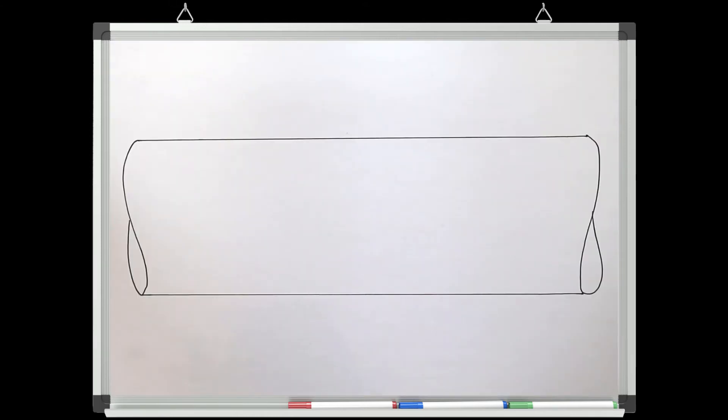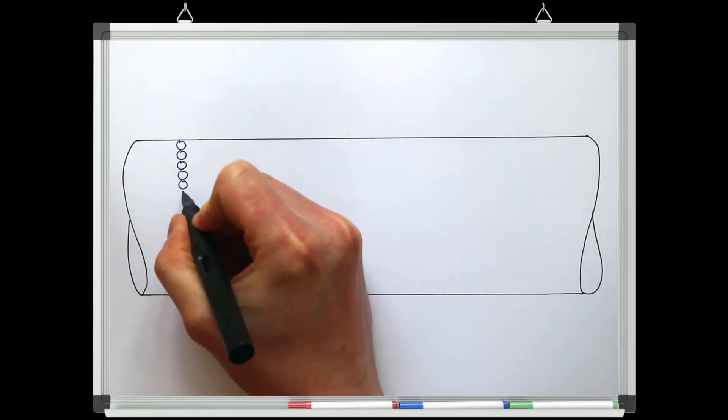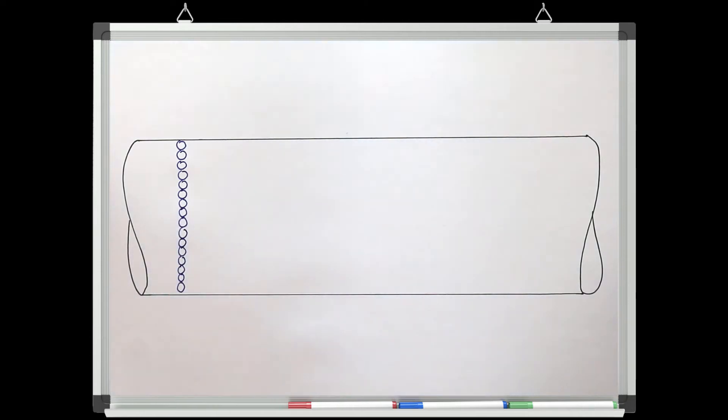Imagine a pipe with a line of fluid particles across the pipe. If we have a flow with no friction or viscosity, all of these particles would travel down the pipe at the same velocity. So every fluid particle will be traveling at the mean velocity of the flow. These particles here would all stay in a perfect line as they travel down the pipe.